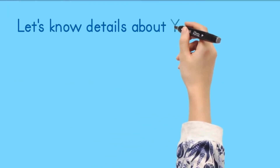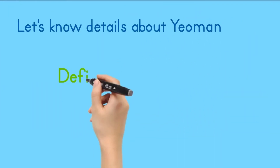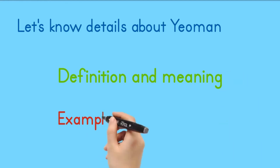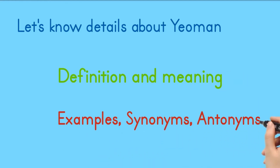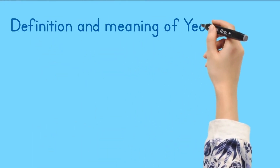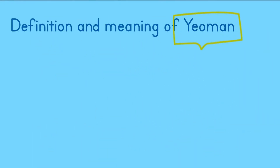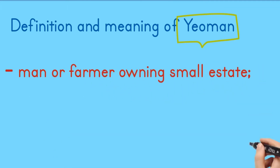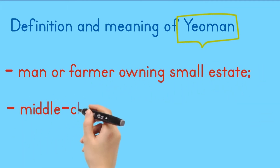Let's know details about yeoman — definition and meaning, examples, synonyms, antonyms. Definition and meaning of yeoman: a man or farmer owning a small estate; a middle class farmer.